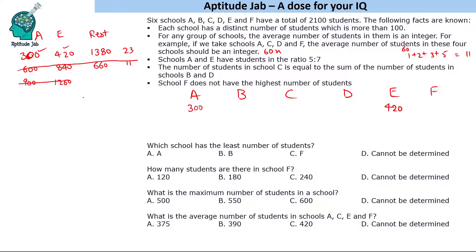So B + D + C + F = 23, with C = B + D. Also, all values must be at least 2 (since more than 100 means at least 120, i.e., 2 × 60). We cannot take 3 as a value because 5 and 7 are already used for A and E in ratio terms.